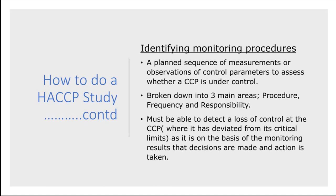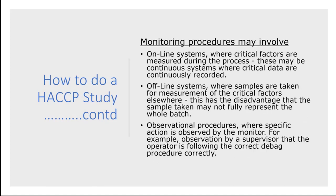We must be able to identify and detect as quickly as possible where there is a loss of control associated with critical control points. It cannot be left to a food safety expert or someone in our quality or compliance team alone — it has to be everyone's responsibility to get on board with HACCP and implement these critical control point procedures. Monitoring procedures may not necessarily mean individuals — these could be electronic online systems like alarm systems that provide alerts to smartphones or email where an issue occurs.